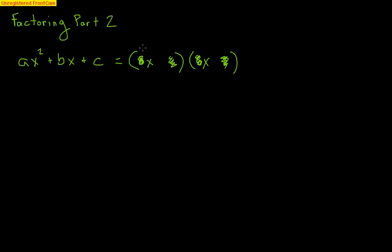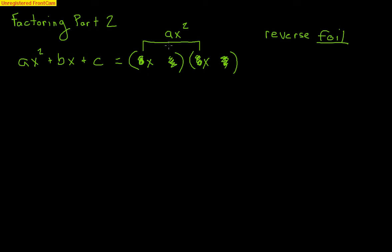We have to understand that we're basically doing reverse FOILing. FOIL stands for first, outside, inside, last. If we take the first term times the first term, that has to generate the ax squared — x times x makes the x squared, so those two numbers have to multiply to make a. The back numbers have to multiply to make c, which comes from the L in FOIL.